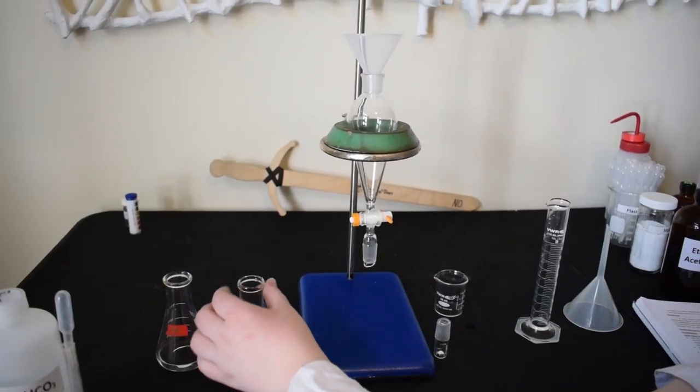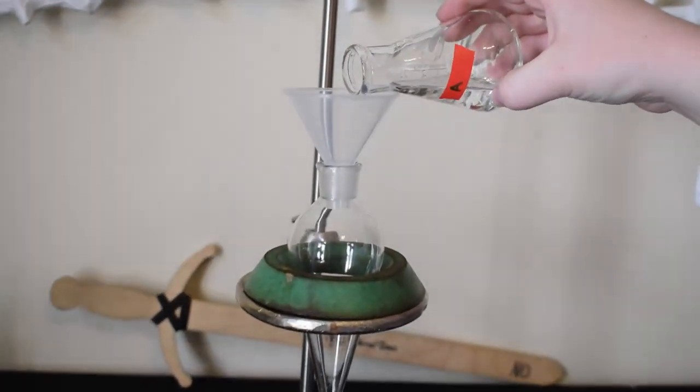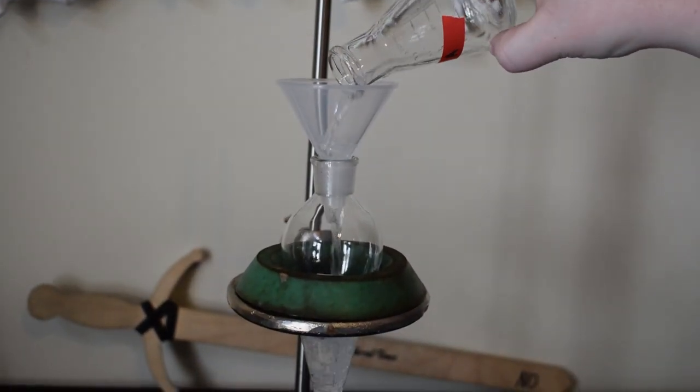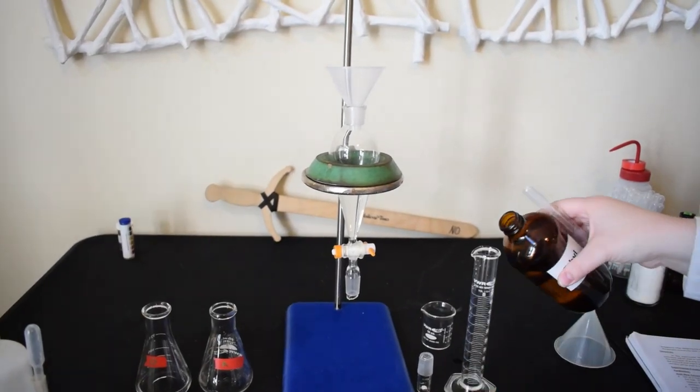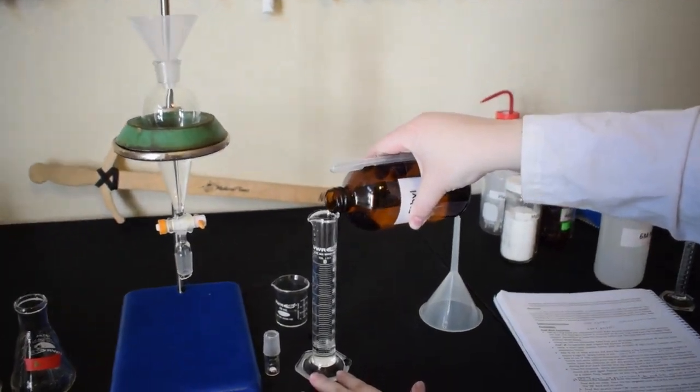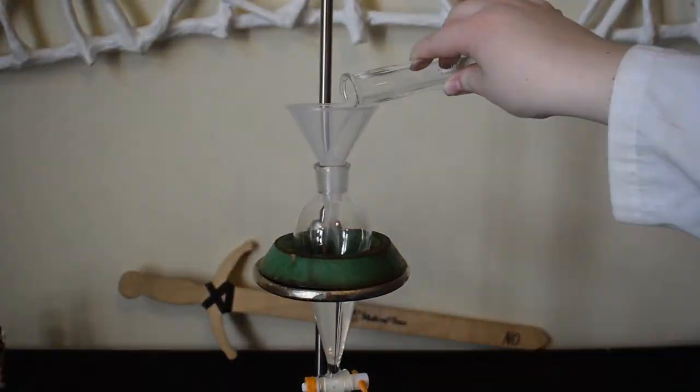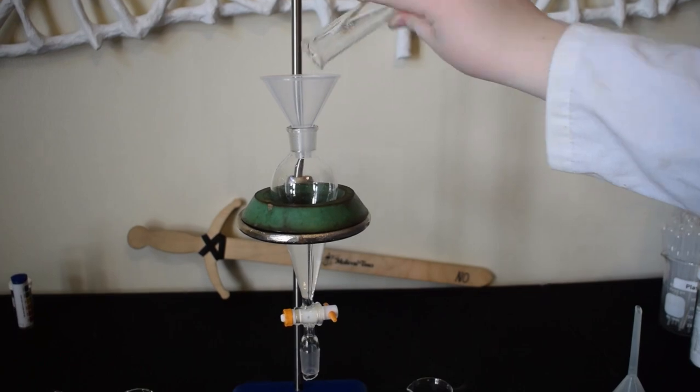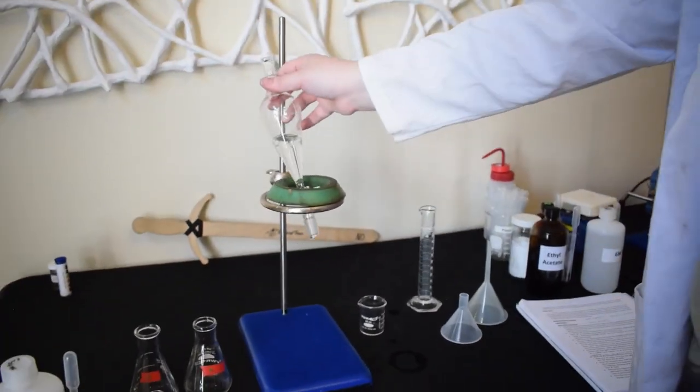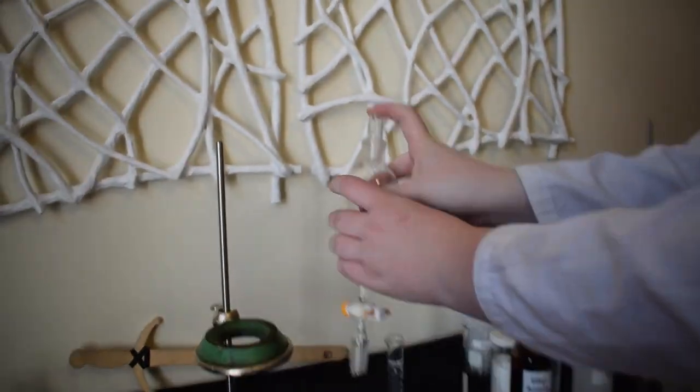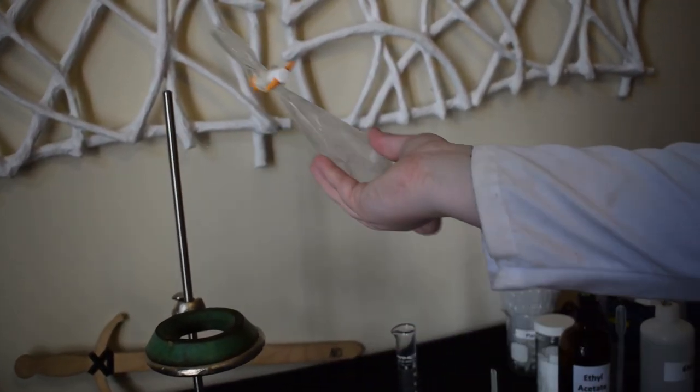Now we are going to take the aqueous layer and add it back into our separatory funnel, making sure that the stopcock is closed before we begin. To that aqueous layer, we are adding 10 more milliliters of ethyl acetate. The purpose of this second wash is to remove any acetaminophen that might still be dissolved in the aqueous layer.